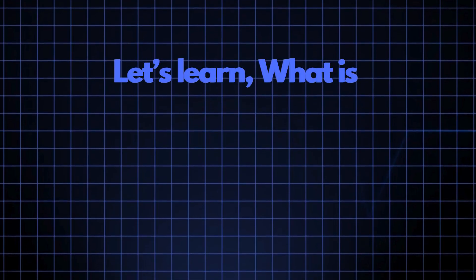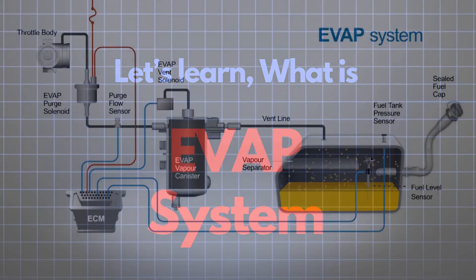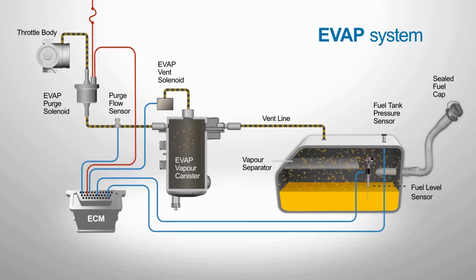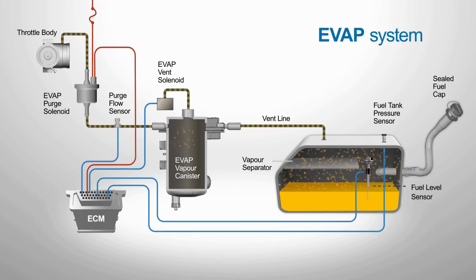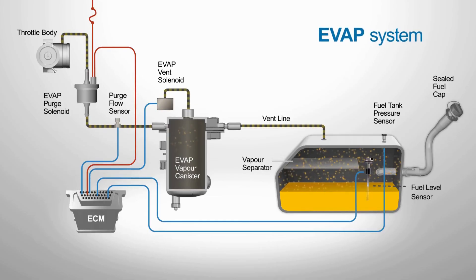Now let's take a quick look at how the EVAP system works. The purpose of the EVAP system is simple but vital — it's designed to prevent fuel vapors from escaping into the atmosphere, which helps reduce air pollution. Basically, it's a collection of components that create a sealed environment, capturing, storing, and eventually purging volatile fuel vapors from the fuel system.